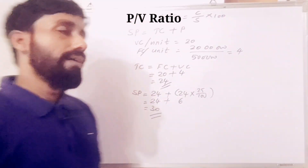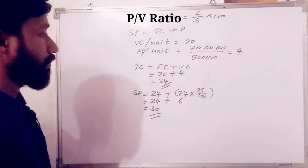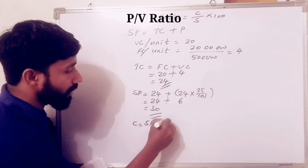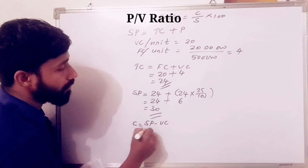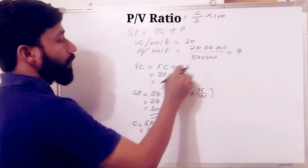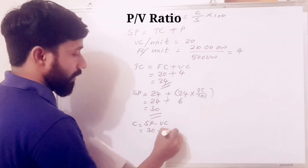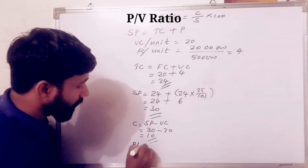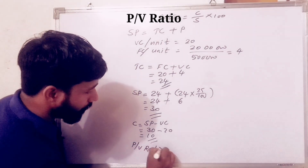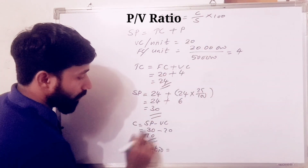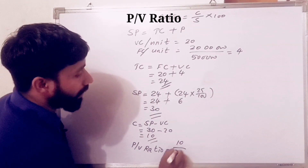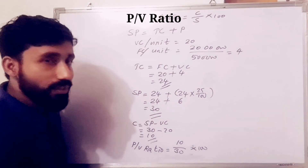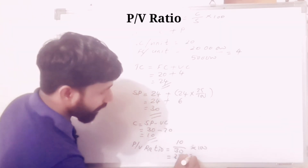Now we calculate the PV ratio. Contribution is equal to selling price minus variable cost: 30 minus 20 equals 10. PV ratio equals contribution divided by sales: 10 divided by 30, into 100, equals 33.333%.